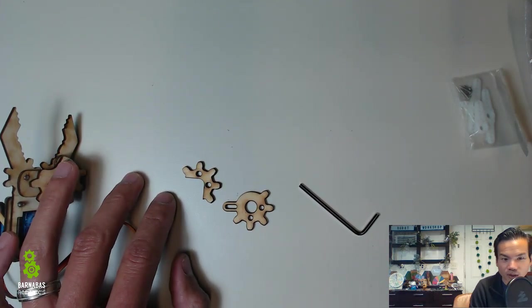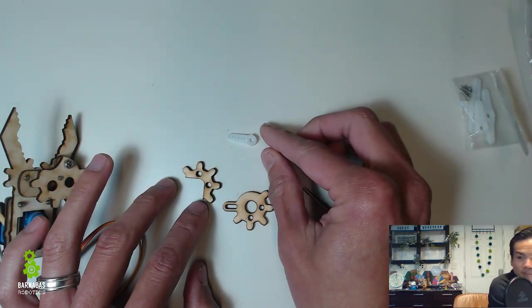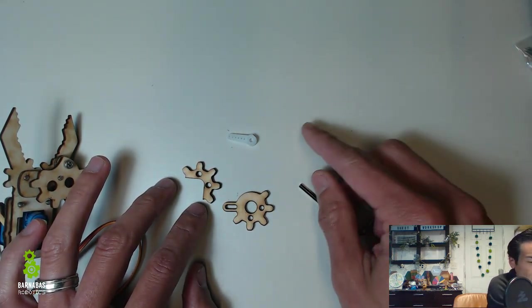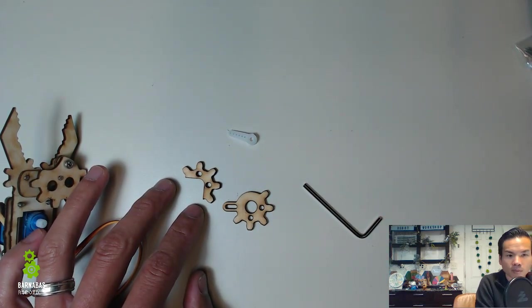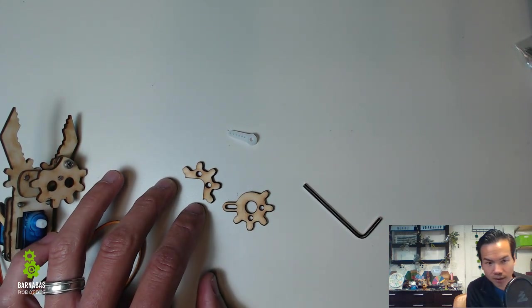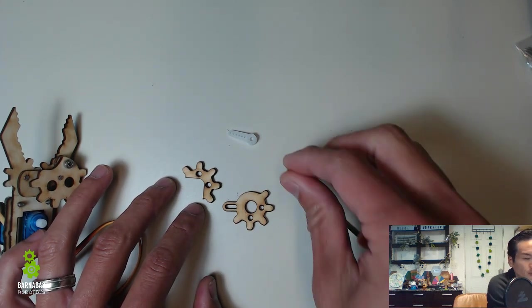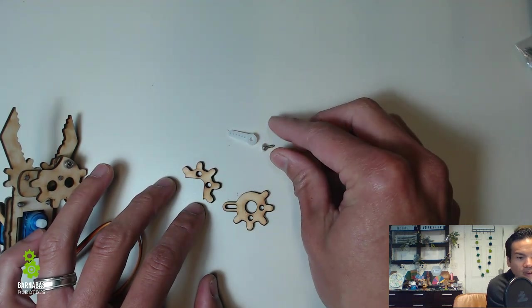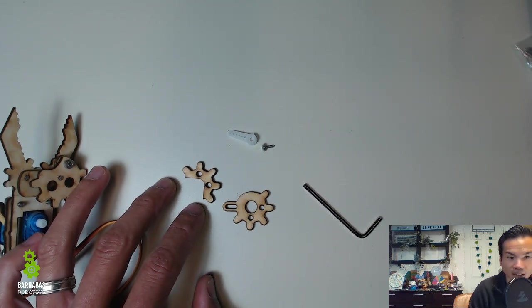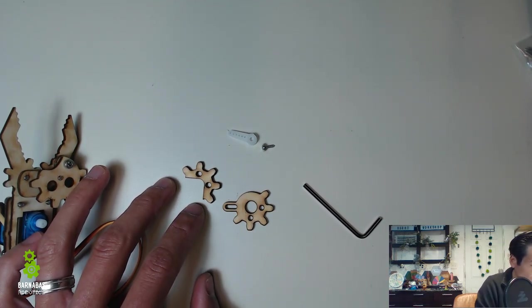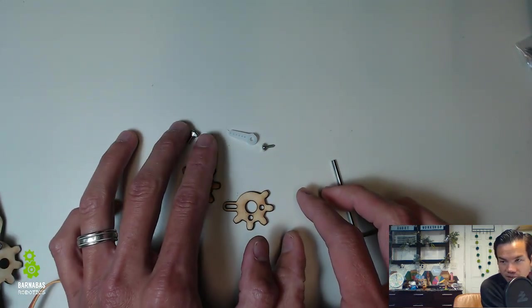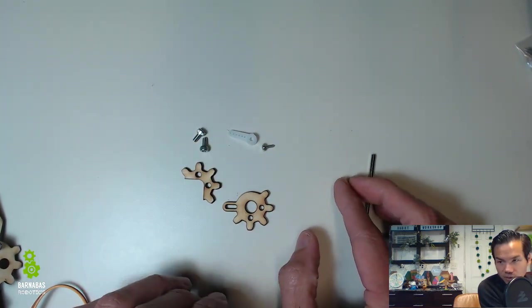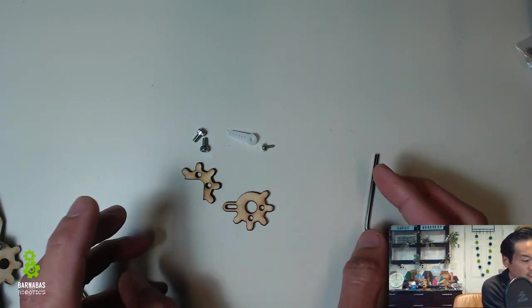We're going to need one servo horn. I've already pulled it out of the bag here. So this servo horn only has one wing here. You're also going to need a servo screw and two M3 by six screws. Let's go ahead and get started.